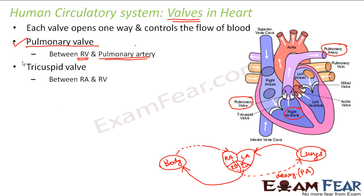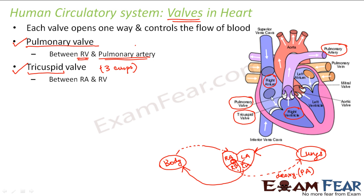The second valve is the tricuspid valve, present between the right auricle and the right ventricle. Blood flows from the right auricle to the right ventricle, so a valve is needed there. This valve is called tricuspid because 'tri' means three — it has three cusps, or flaps. So the tricuspid valve is present between the right auricle and right ventricle.